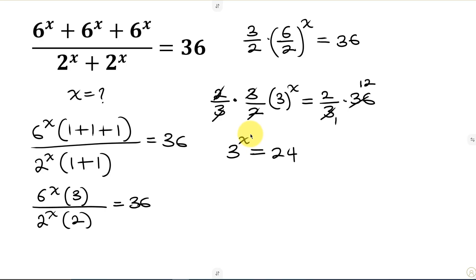Now whenever we have an exponent here and the exponent is the unknown, what we usually do next is to take the log of both sides. So I'll take the log of 3 to the power of x equal to. I'll also take the log of 24.